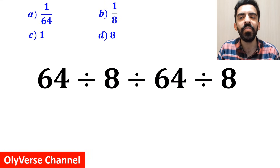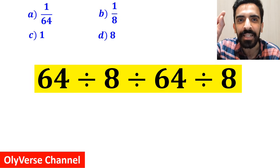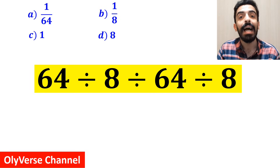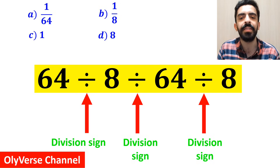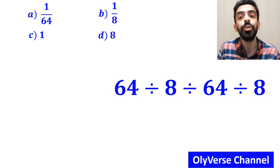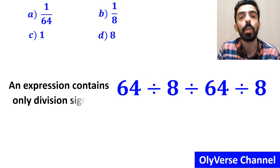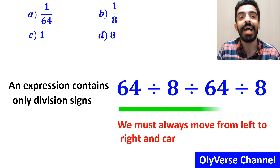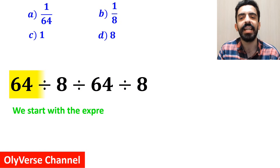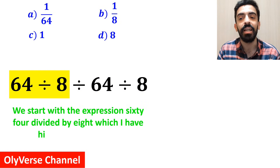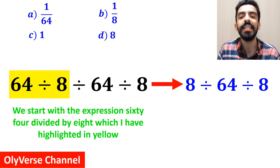Alright, now let me walk you through step by step how to solve this expression properly. As you can see in the image, this expression has three division signs. It's very important to note that when an expression contains only division signs, we must always move from left to right and carry them out in order. So first we start with the expression 64 divided by 8 (highlighted in yellow), and instead of this expression, we can write 8 divided by 64, then divide by 8.